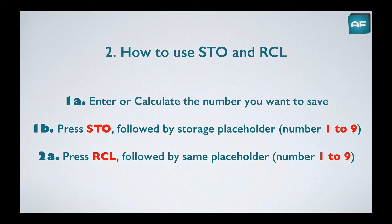So how do you use Store and Recall? It's not very complicated, as you'll see in the live demonstration in a minute. All you've got to do is enter or calculate the number you want to save — you can enter it directly, or you can just have a number pop up from an earlier calculation. You press the STO button, which is on the bottom left of the Texas BA2+. Then after you press the STO button, you follow it by a number — it's actually 0 to 9. That's the storage placeholder.